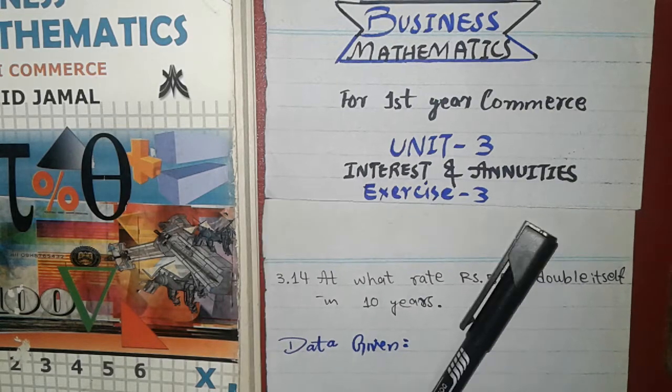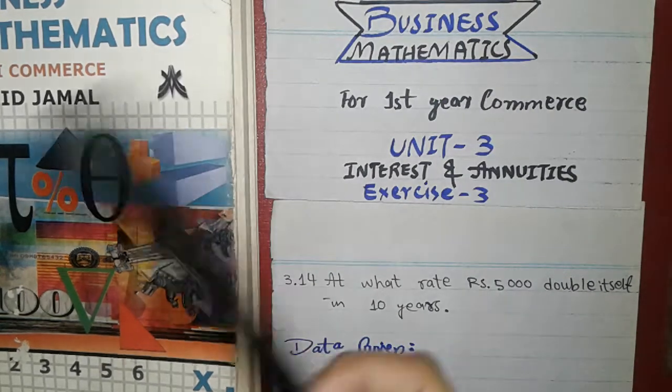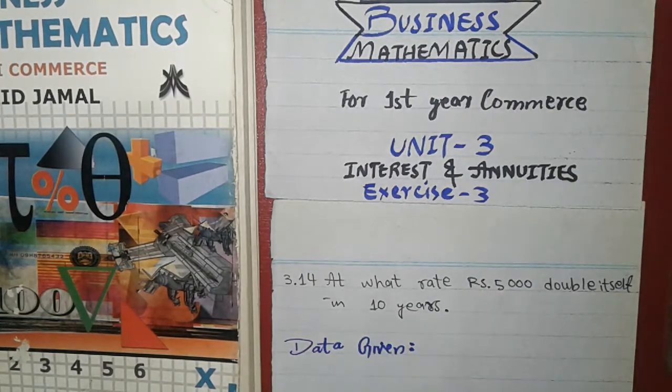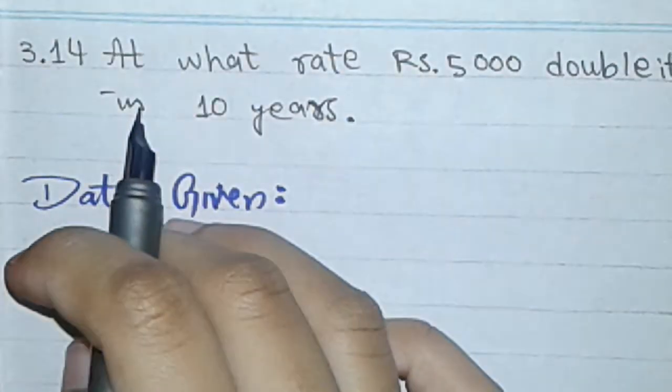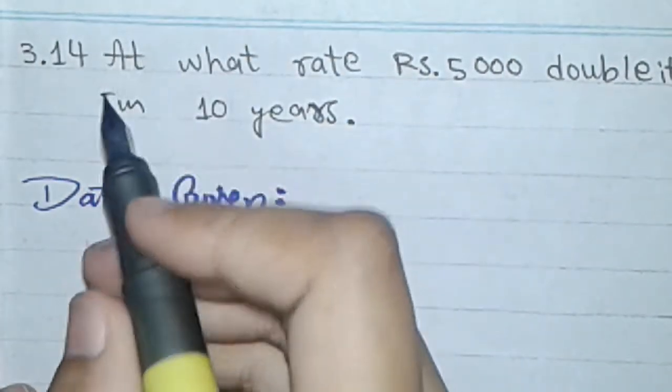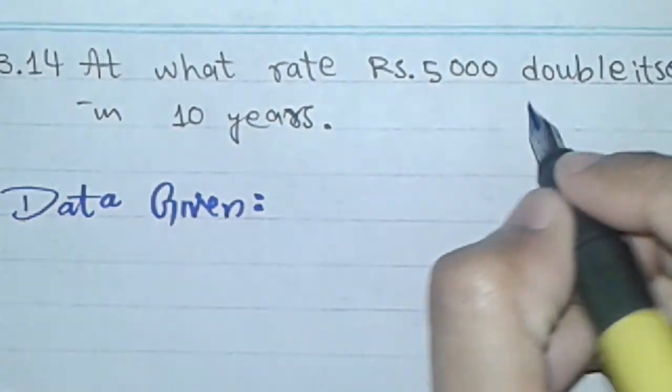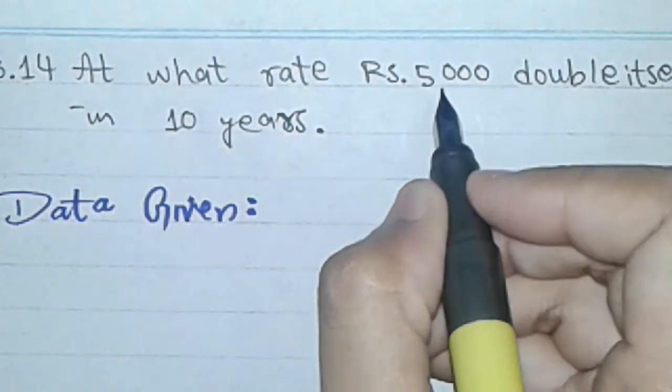Question number 3.14. We will solve this in video. And we are following Shai Jamal's book. So here is the question 3.14: At what rate Rs. 5,000 double itself in 10 years?